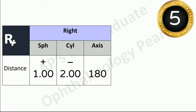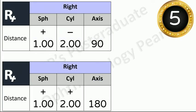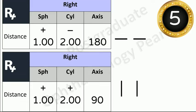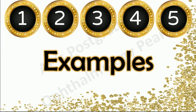Next, to determine whether it is with-the-rule or against-the-rule astigmatism, note the sign of the cylinder and then note the axis. 180 degrees is associated with the horizontal plane, so consider a minus sign and axis 180 as two horizontal lines. A plus cylinder has a vertical line, and 90 degrees is associated with the vertical plane, so plus cylinder with axis 90 represents two vertical lines. A minus cylinder with axis 90 gives one horizontal and one vertical line. When both lines are in the same direction, it is with-the-rule astigmatism; when in opposite directions, it is against-the-rule astigmatism.